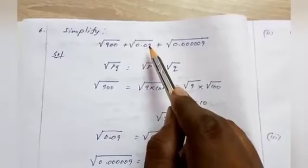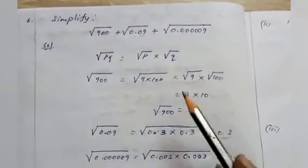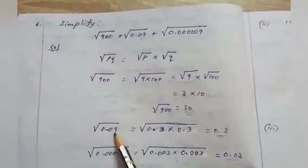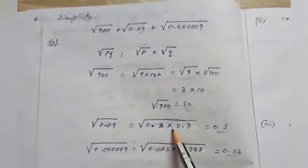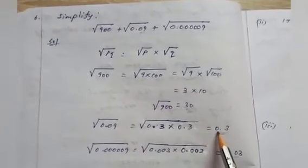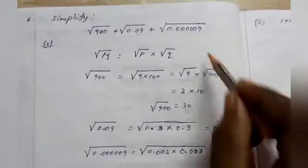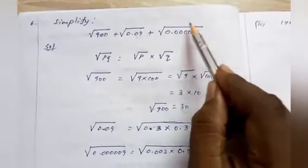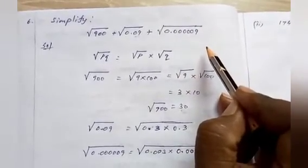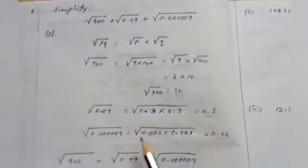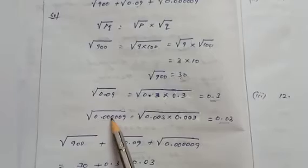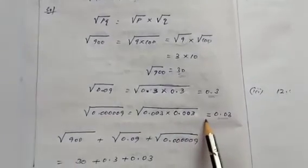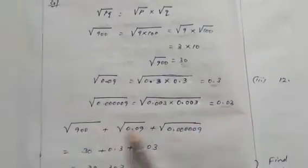For √0.09: 0.09 contains two decimal places, so one of its equal factors will contain one decimal place. So √0.09 = √(0.3 × 0.3) = 0.3. For √0.000009: it contains six decimal places, so one of its equal factors will contain three decimal places. So √0.000009 = √(0.003 × 0.003) = 0.003.